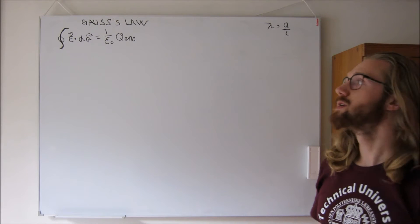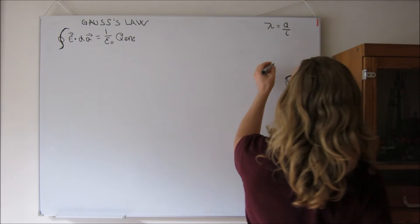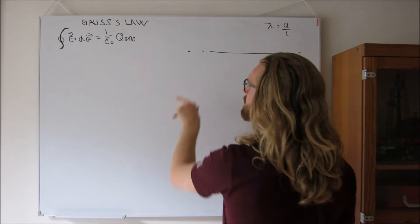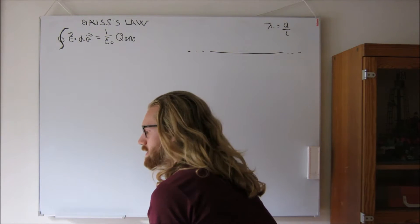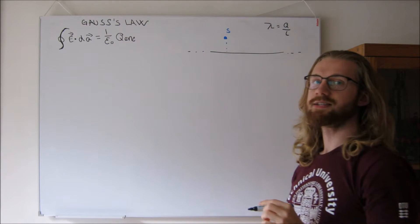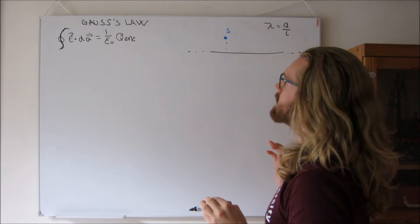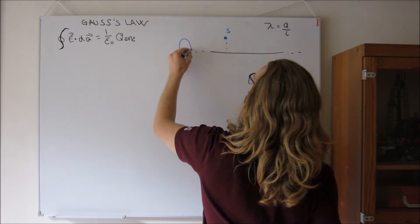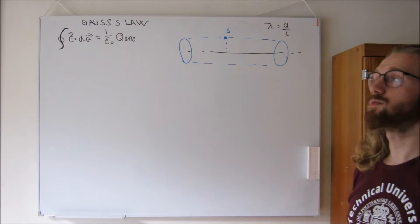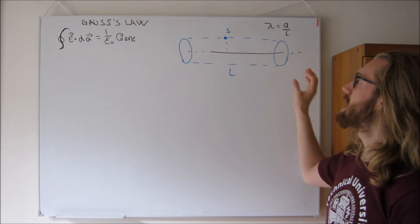We want to use Gauss's law to find the strength of the electrical field at a distance s from an infinitely long straight wire. We will do it by applying a cylinder around a piece of this wire — a cylinder with length L that captures part of the wire.